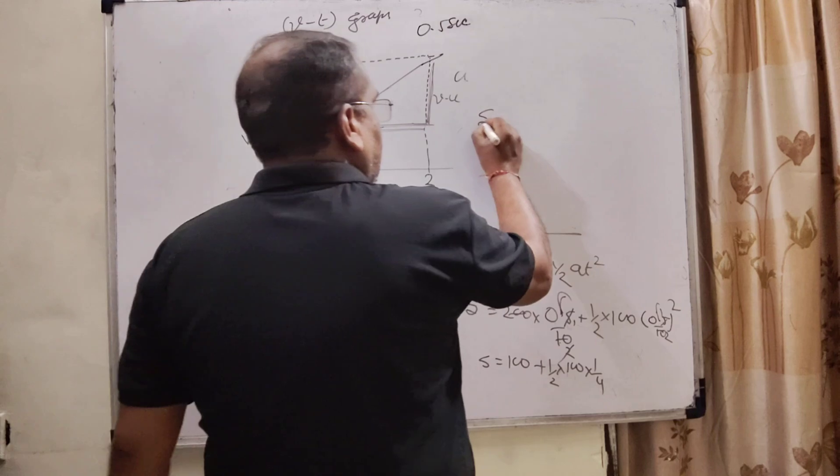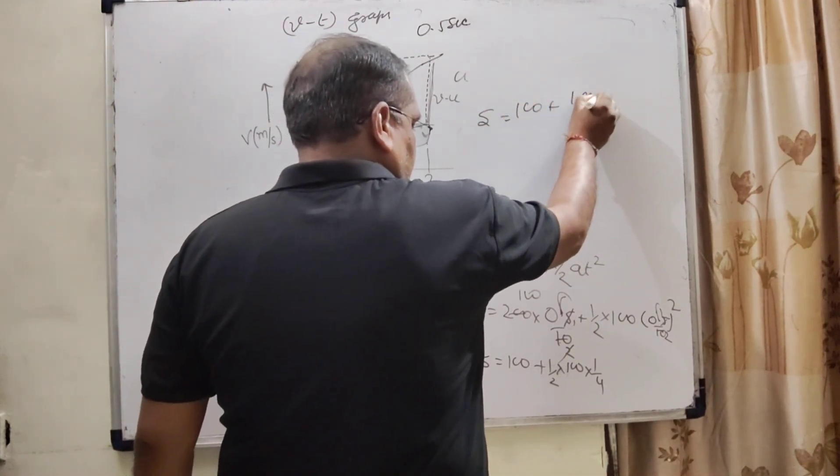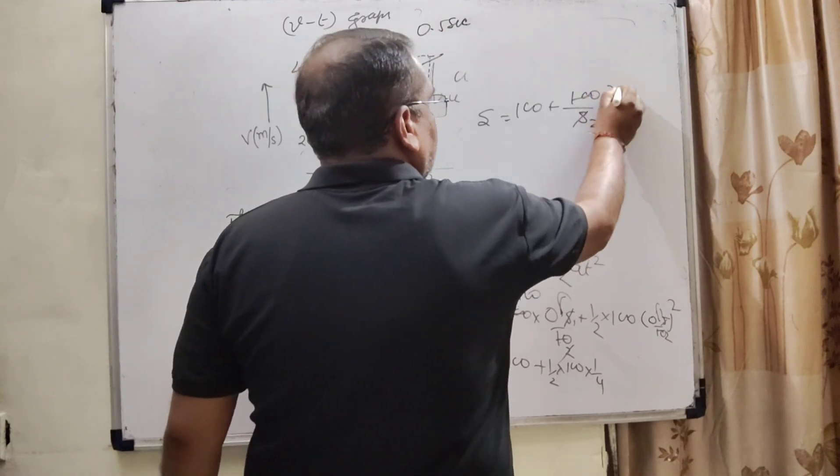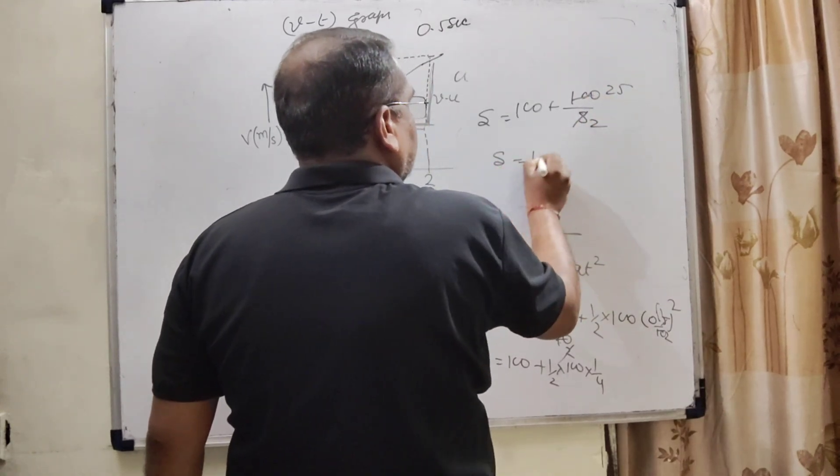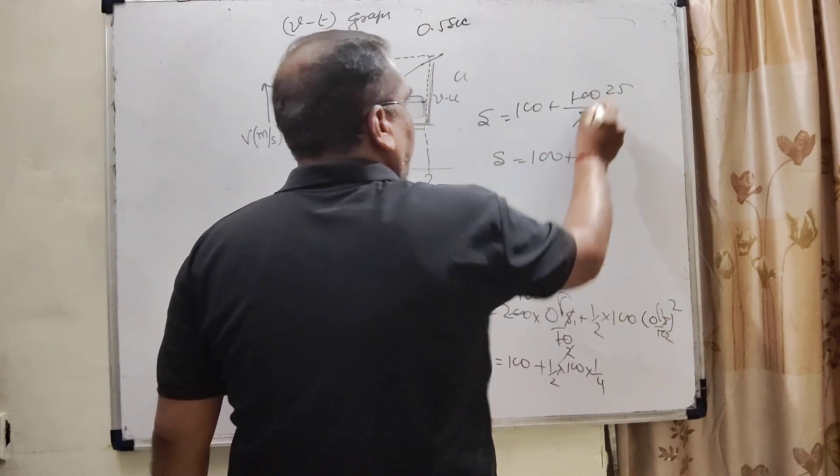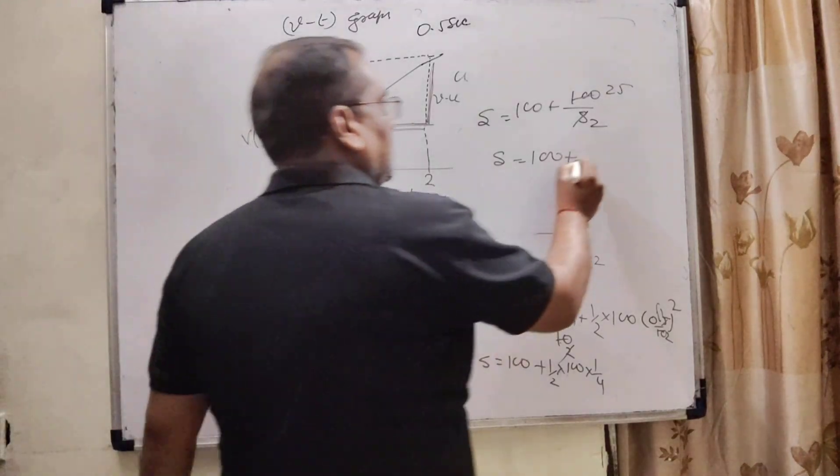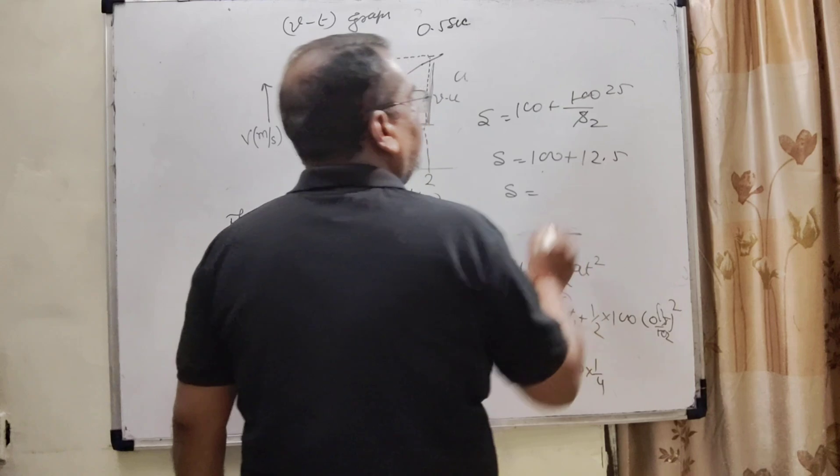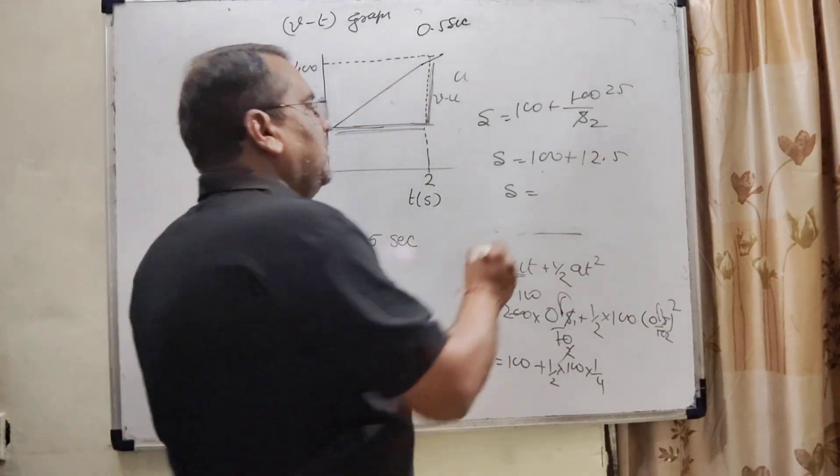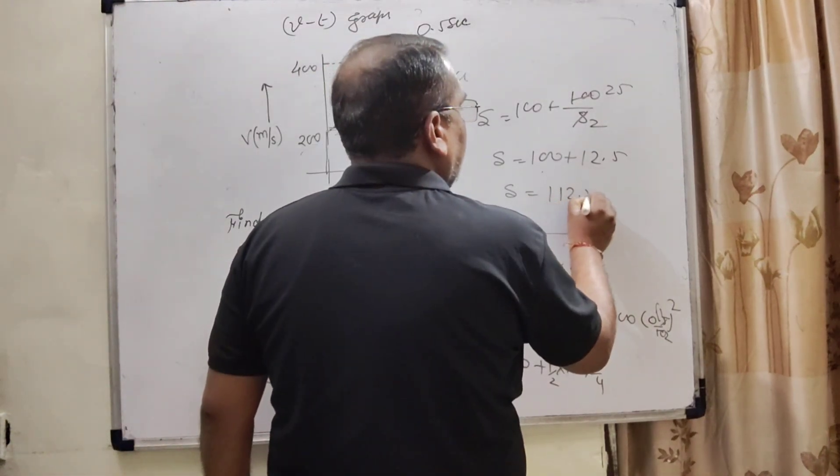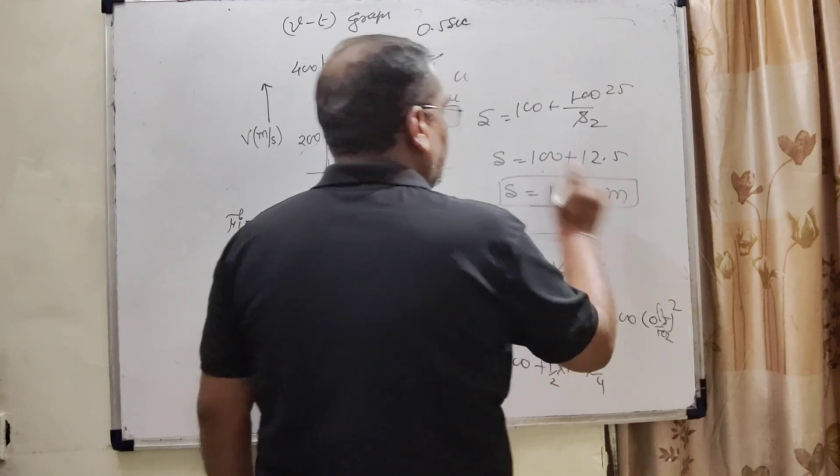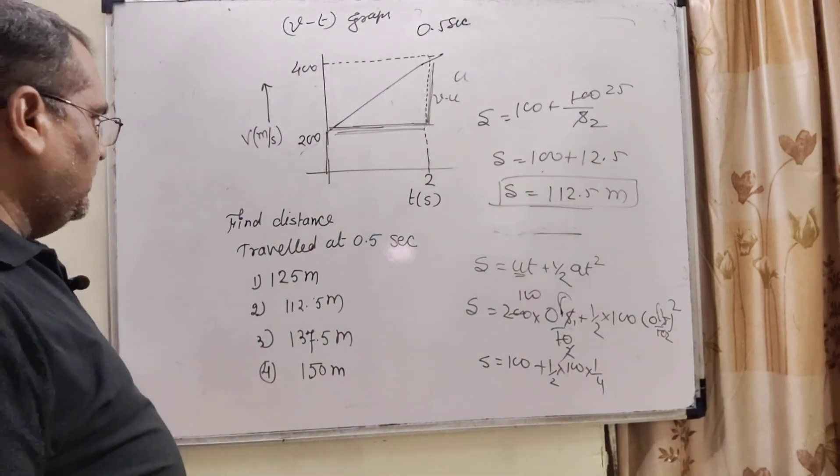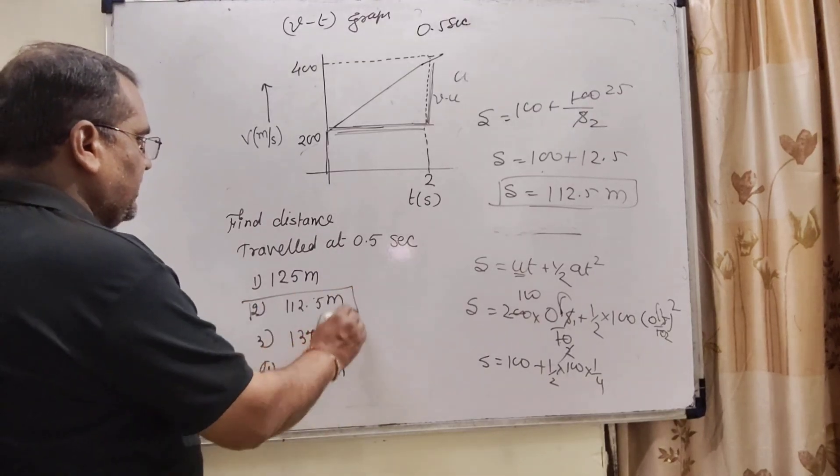So here, S is equal to 100 plus 100 by 8. 4 to the 8, that is 25. Means S is equal to 100. And half of 25, that is 12.5. So total 100 plus 12.5. That is 112.5 meter. So here, option second. Option second is correct.